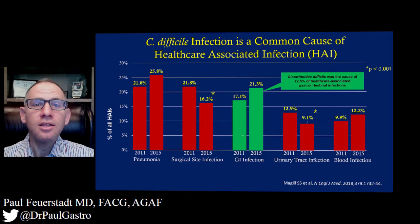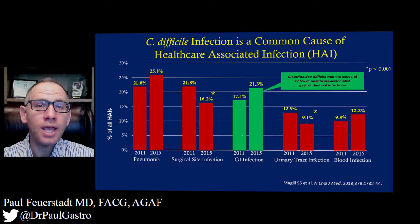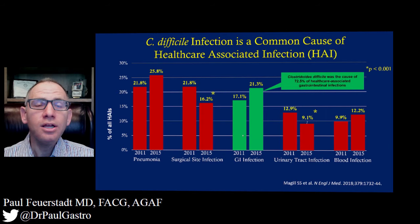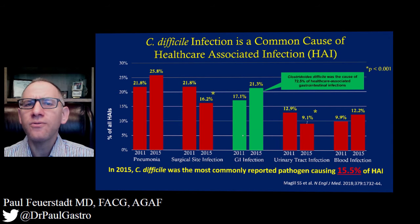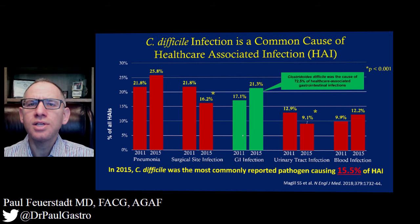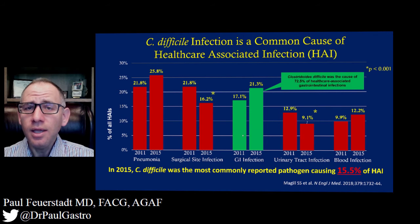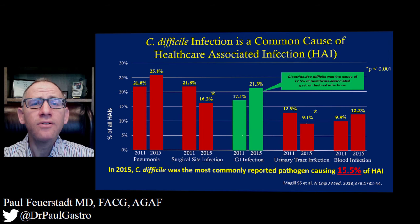The proportion of infections that were pneumonias actually increased from 21.8% to 25.8%. In addition, the proportion of gastrointestinal infections increased from 17.1% to 21.3%. C. difficile was the most common healthcare-associated infection, accounting for approximately 15.5% of all healthcare-associated infections. The bottom line is that healthcare-associated infection is associated with worse outcomes, and C. difficile is the most common healthcare-associated infection. As a country and as a healthcare system, we need to consider ways of reducing healthcare-associated C. difficile further, therefore reducing the risks and complications associated with this infection.